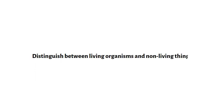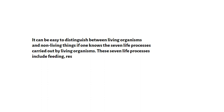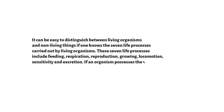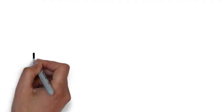Let us look at how to distinguish between living organisms and non-living things. It can be easy to distinguish between them if one knows the seven life processes: feeding, respiration, reproduction, growing, locomotion, sensitivity, and excretion. If an organism possesses all seven life processes, it is classified as a living organism. If an organism does not possess all seven life processes, it is classified as a non-living thing.